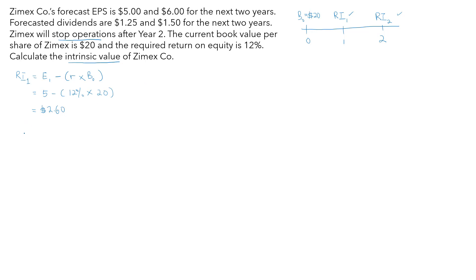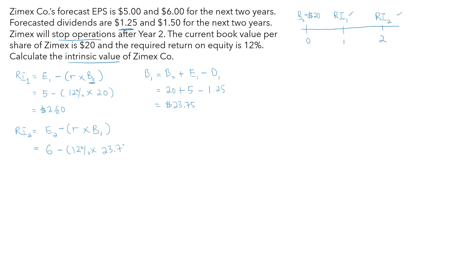For year two's residual income, we need EPS for year two minus the cost of equity times the beginning book value for year two, which is the ending book value of year one (B1). Since we only have B0, we calculate B1 using the clean surplus relationship: B1 = B0 + EPS1 − Dividend1 = $20 + $5 − $1.25 = $23.75. So year two residual income = $6 − 12% × $23.75 = $3.15.